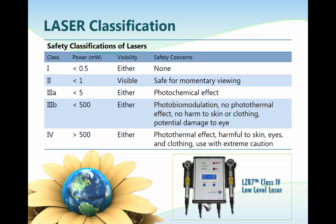Class 2 lasers have a power of less than 1 milliwatt. The beams are visible and these are considered low power lasers with visible light emission. The normal eye blink reflex, approximately 0.25 seconds, will protect the eye from direct contact with the laser output. These lasers must be labeled with caution: 'Laser Radiation — Do not stare into beam.' There is also a Class 2A which produces visible laser output, such as those used in barcode scanners.